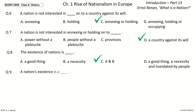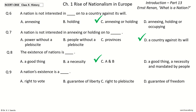Question 9. A nation's existence is a dash. The options are: right to vote, guarantee of liberty, right to plebiscite, guarantee of freedom. And the answer is guarantee of liberty. So, a nation's existence is a guarantee of liberty.